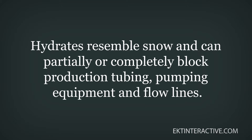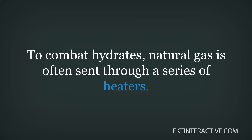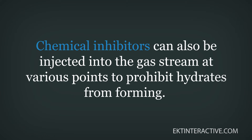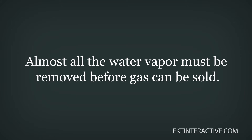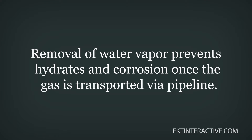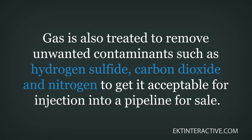Natural gas requires additional treatment and processing beyond separation for a variety of reasons. First is the prevention of hydrate formation. A hydrate is a solid, crystalline compound formed by hydrocarbons and water under reduced temperatures and pressure as gas leaves the wellhead. Hydrates resemble snow and can partially or completely block production tubing, pumping equipment, and flow lines. To combat hydrates, natural gas is often sent through a series of heaters, and chemical inhibitors can also be injected into the gas stream to prohibit hydrate formation.